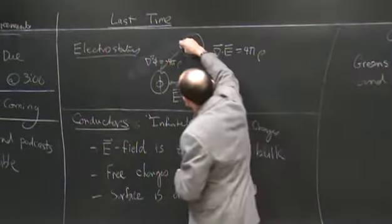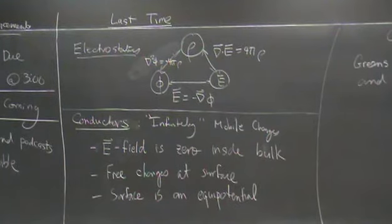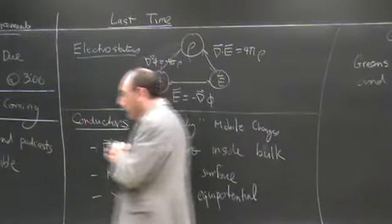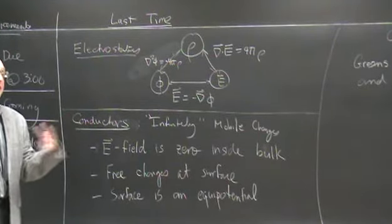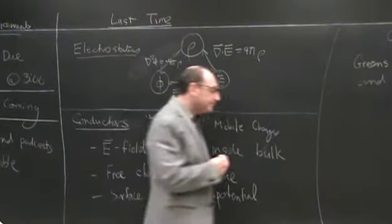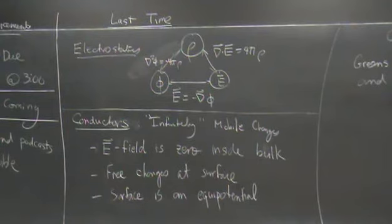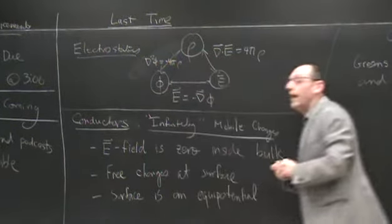Quite often we're looking at circumstances where we won't necessarily specify just the charges, but we will specify that there are some conducting materials around. Of course, if we knew all the charges in that material, then in principle that solution is there, but in practice we don't necessarily know that, and it may not be the most efficient thing to do. We'll look at a reminder of a particular example of that in a moment.